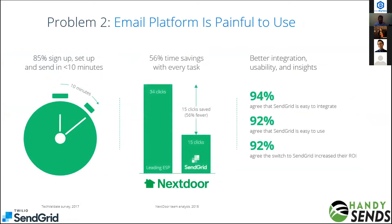For Problem 2 — if the email platform is painful to use — 85% of signups in our customer base complete setup in less than 10 minutes and start sending emails. A company that previously used a leading email service provider took 34 clicks to set everything up; with SendGrid, it takes only 15 clicks. 94% of people say SendGrid is very easy to integrate, 92% agree it's easy to use, and 92% switched to SendGrid to increase their ROI.